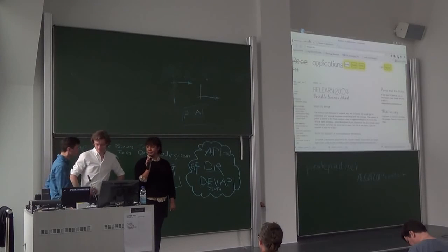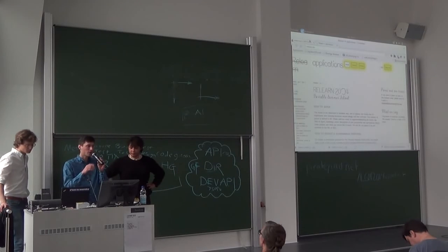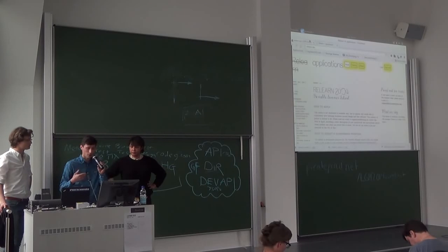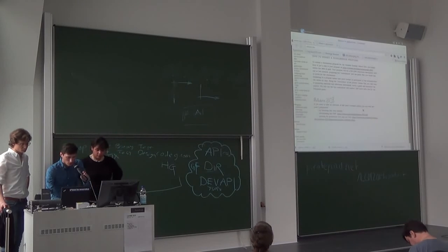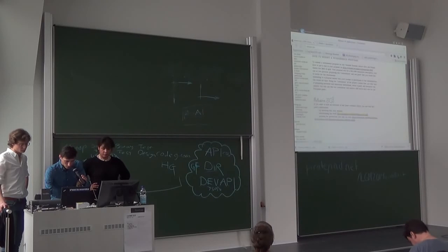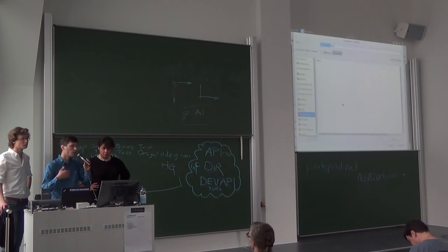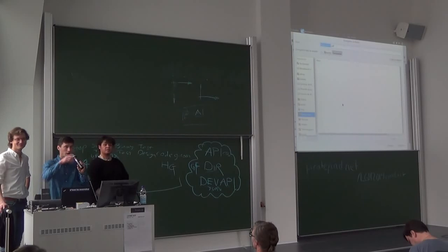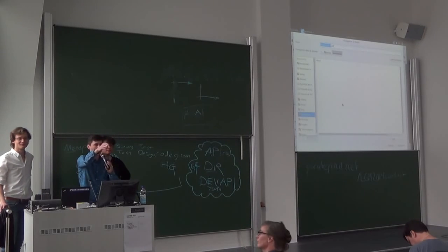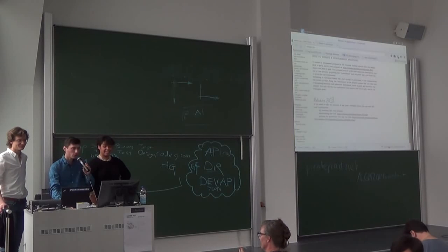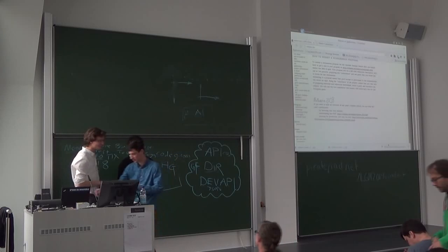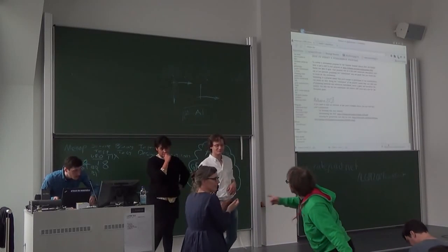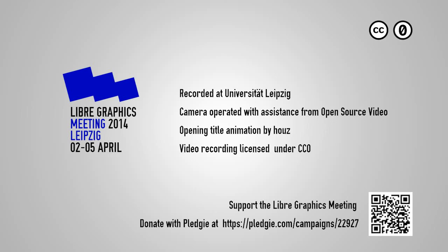I'd like to mention that we did the documentation last year and produced a PDF. If you go to the website relearn.be, you'll see at the bottom of the page you can download the documentation of last year's edition. You have a live copy, a printed copy there, and you can also order a copy on lulu.com. I think this is it.